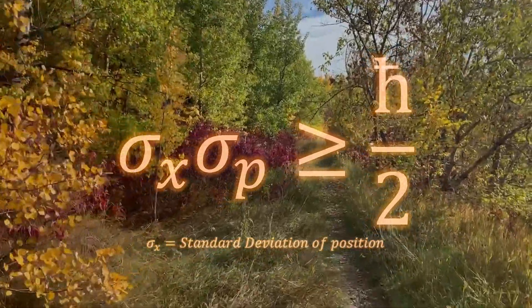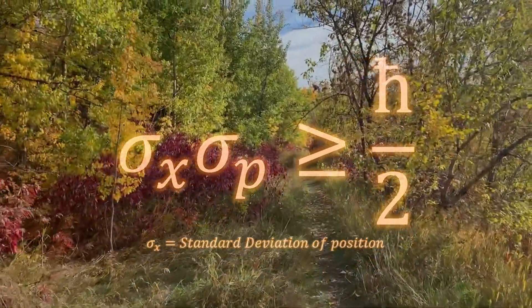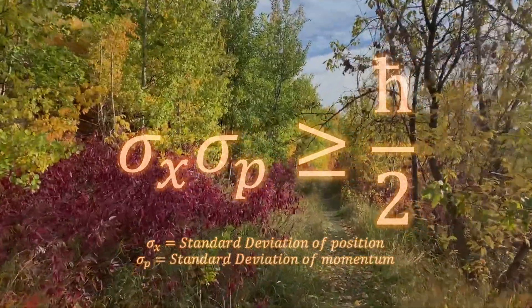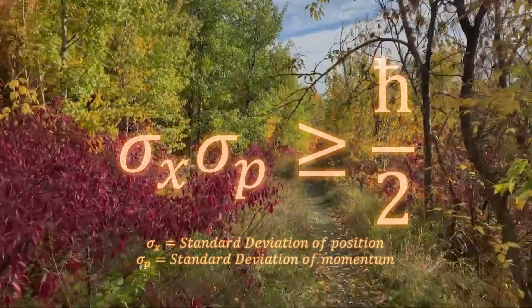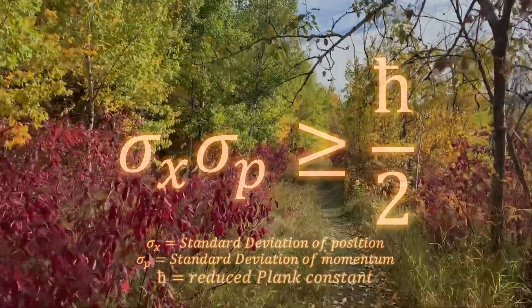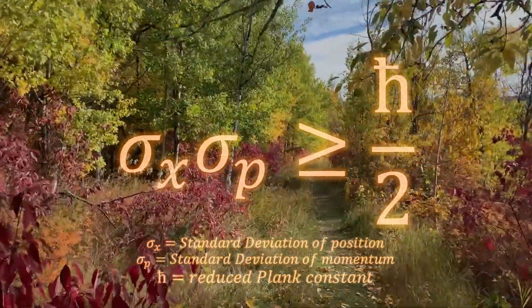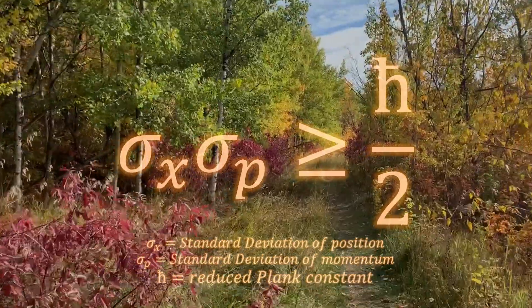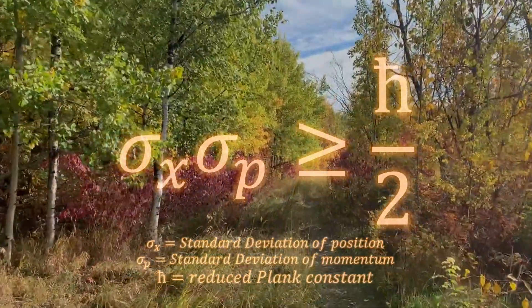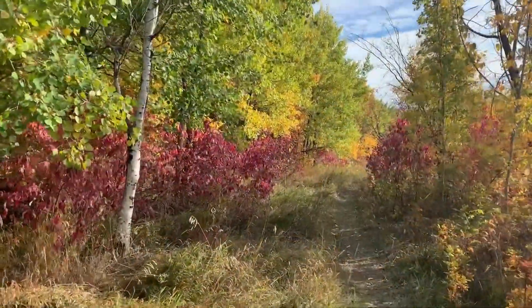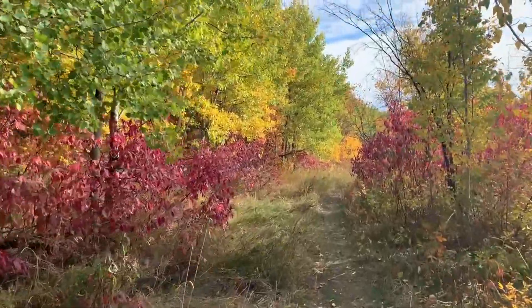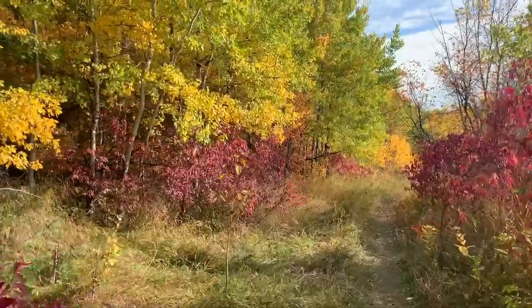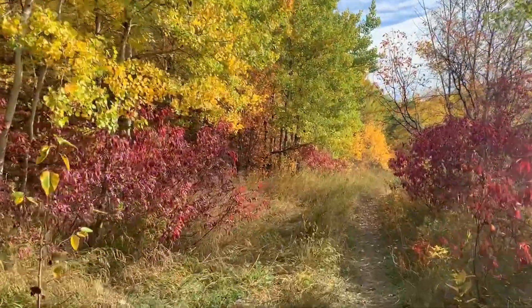Sigma X times Sigma P is greater than or equal to the reduced Planck constant over two. Sigma X is the standard deviation of your measurement of position. Sigma P is your standard deviation of your measurement of momentum. So as that standard deviation gets smaller — as your measurement gets more accurate of one of those two variables — the other one has to get less accurate to keep that number greater than this Planck constant.